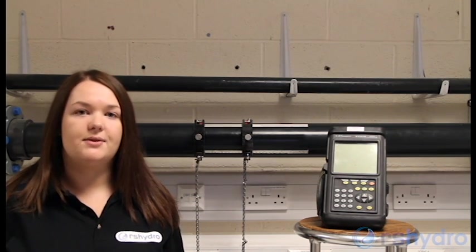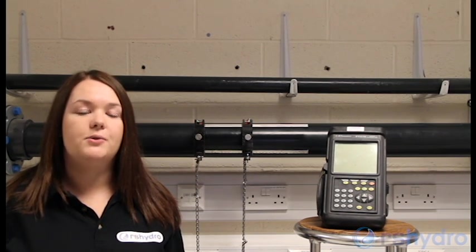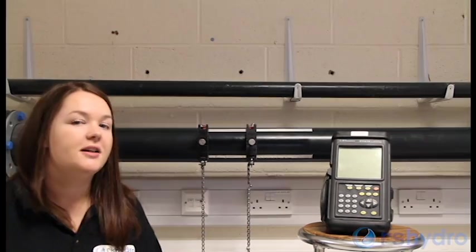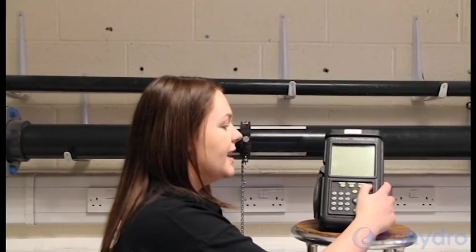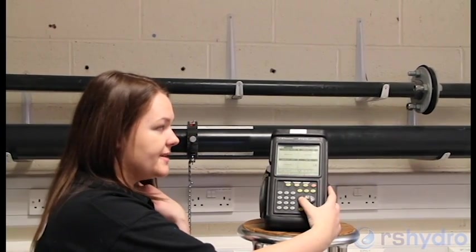The first step in any flow meter installation is to configure the meter for the application. In this case, we're measuring the flow of cold water through a PVC pipe. To configure the meter, we turn it on using the power on button. This meter is already turned on as it takes a while to boot up.